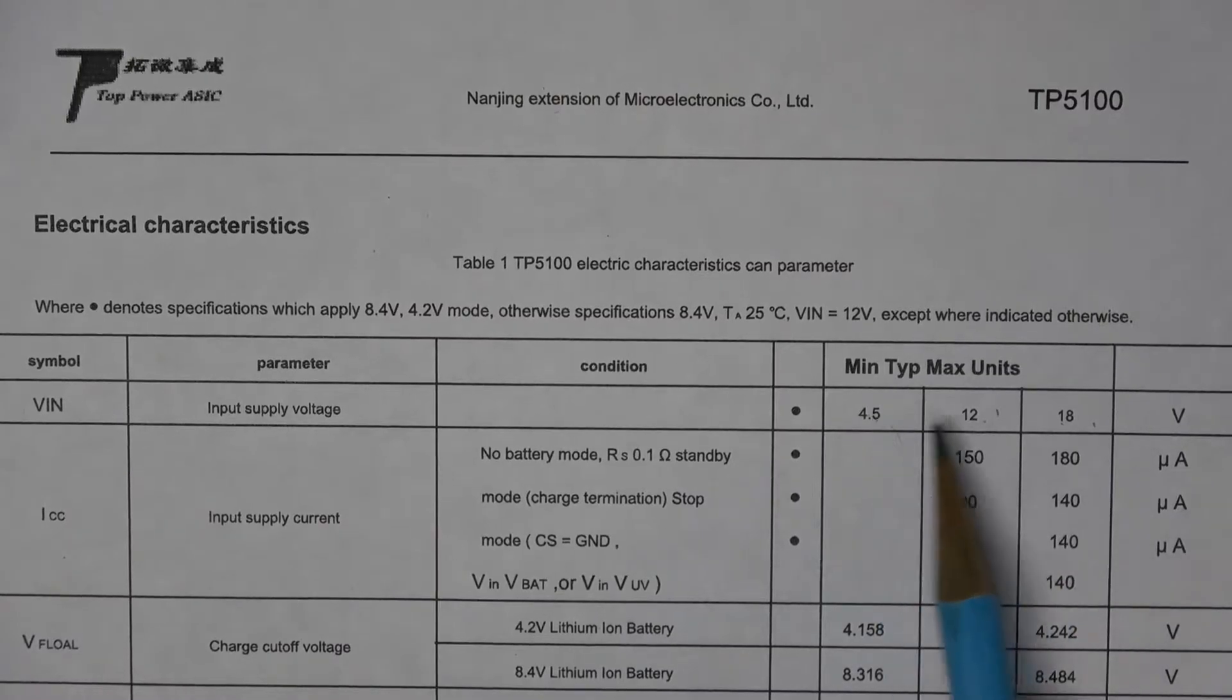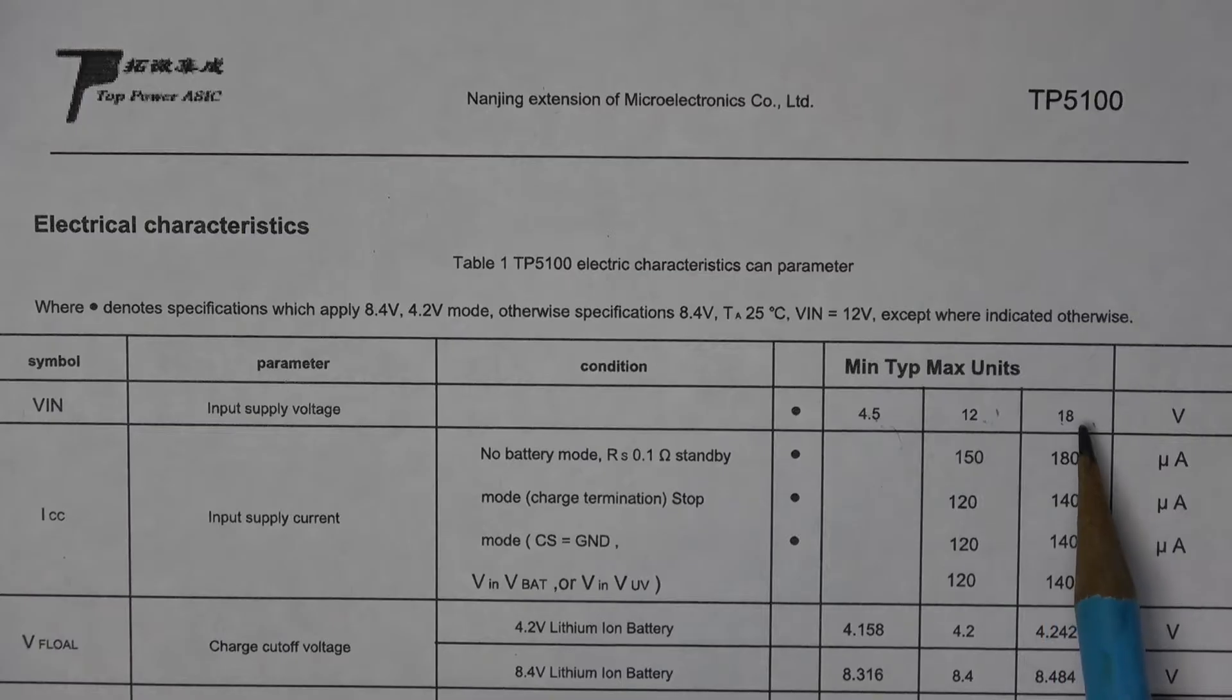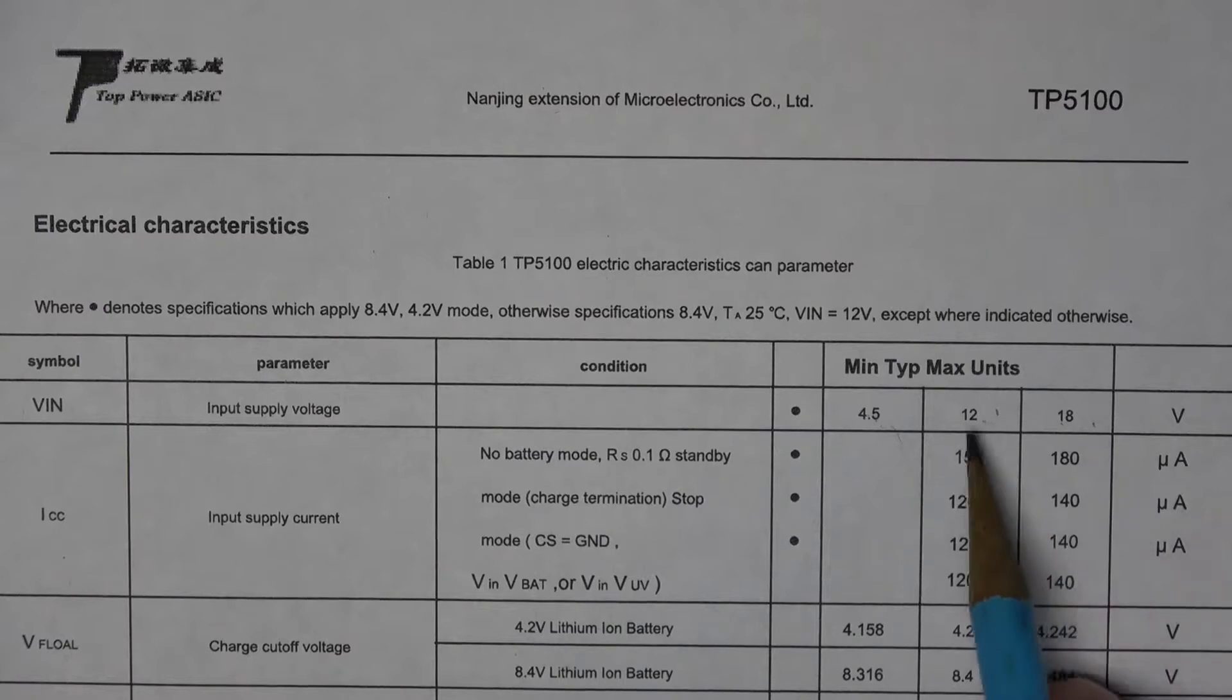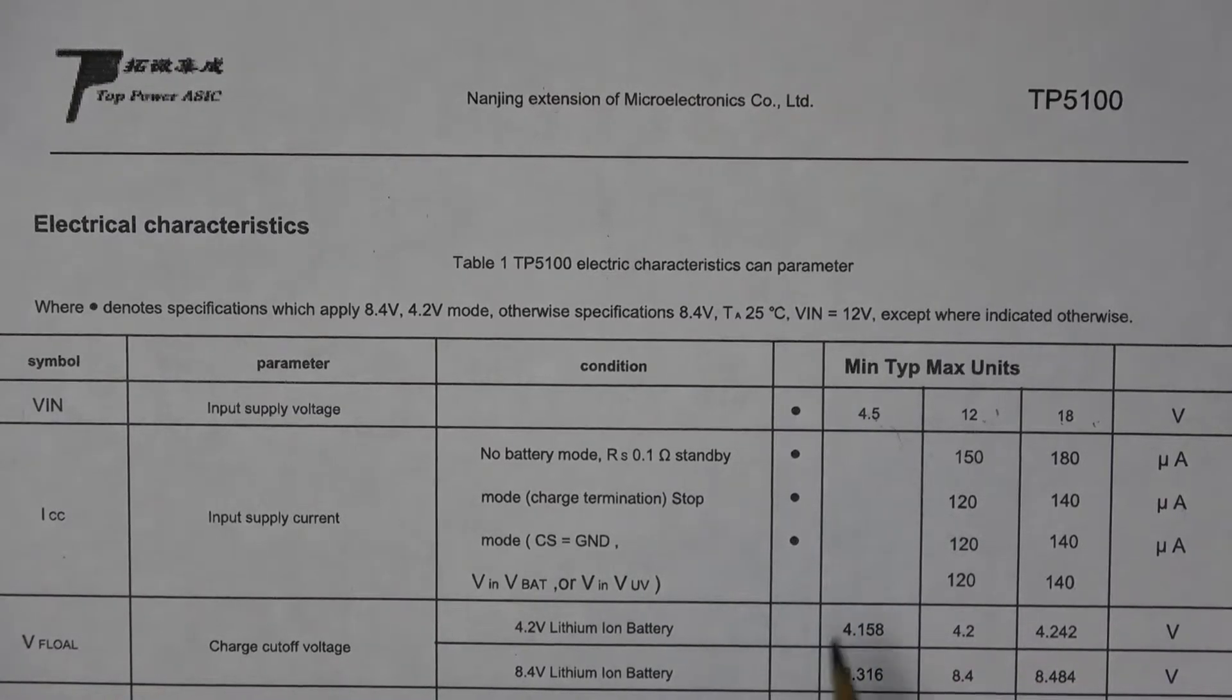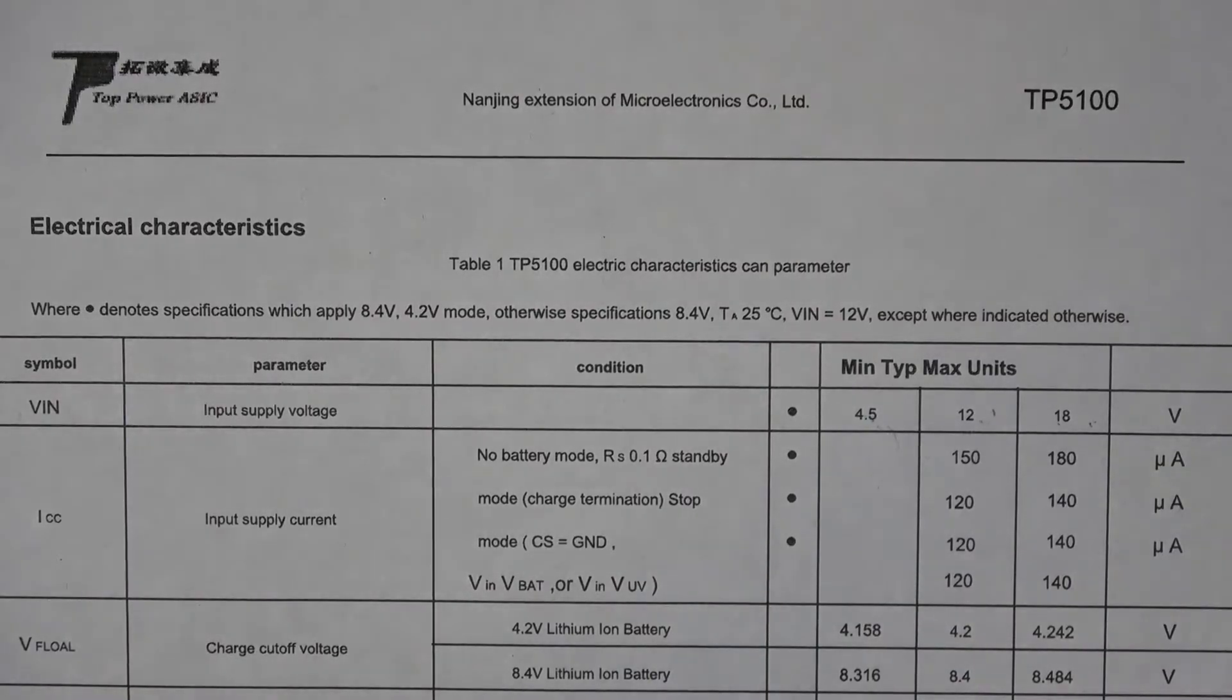Here's another page on the TP5100 data sheet that shows the input voltage. We got 4.5 volts, 12, and 18 volts. At 12 and 18 volts, the board acts as a buck converter that reduces the voltage down to either 8.4 volts or 4.2 volts. But at 4.5 volts, I'm curious to see if it turns into a boost converter because it has to boost the voltage up to 8.4 volts. That's what I'm going to find out next.